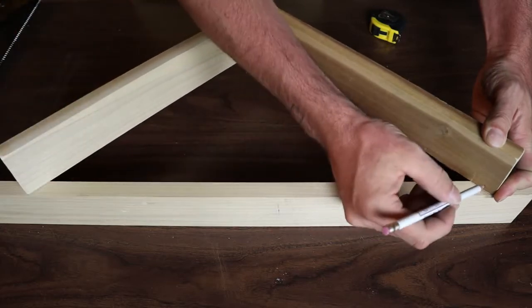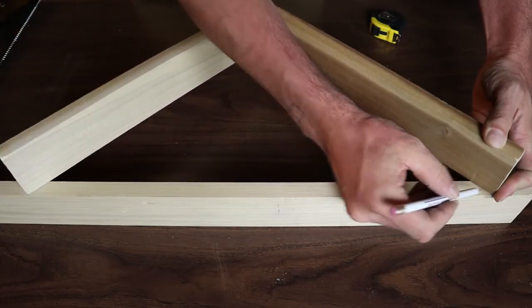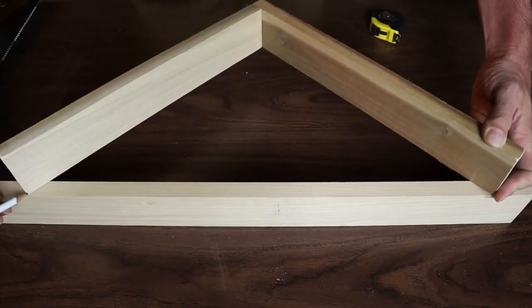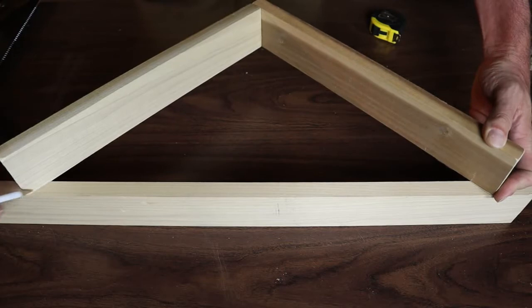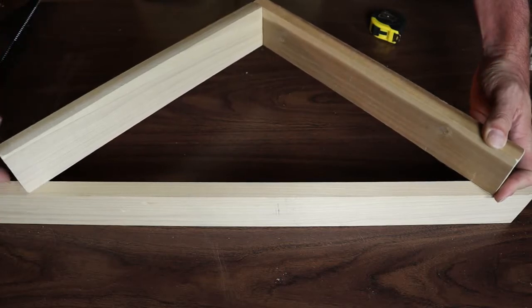And then what we'll do when we cut this, we'll cut them slightly on the big side, just about a blade width on the big side. And we put it in, it'll just spread this triangle a tiny bit but not enough to matter, and it'll be a nice snug fit. This will be a really nice looking corner.